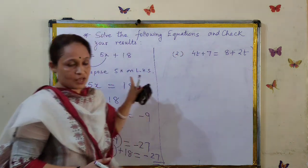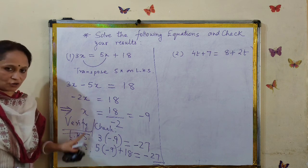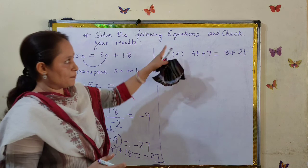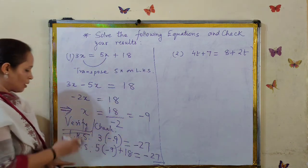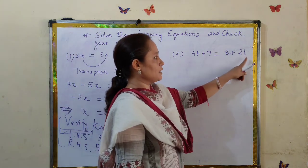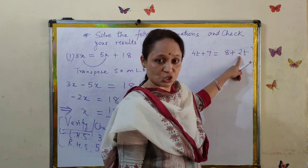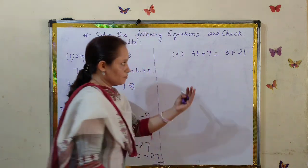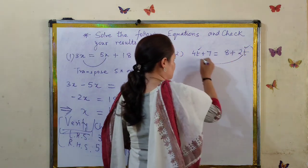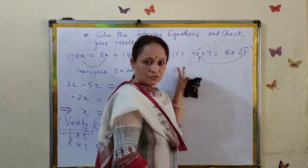That means the value x equals minus 9 that we obtained is correct. You can check your results as well. If it is mentioned in the question to check your result, you have to show this part. If it is not mentioned, then you don't have to show it. Let's do the next question — it has a variable t, and again both sides are algebraic expressions.